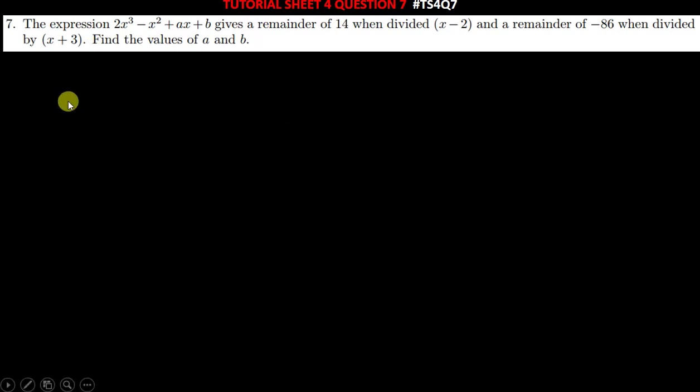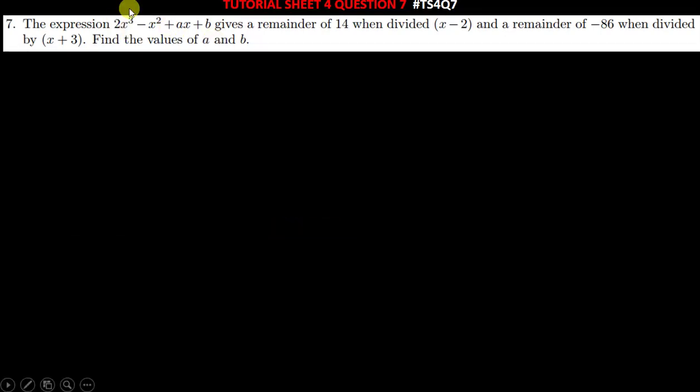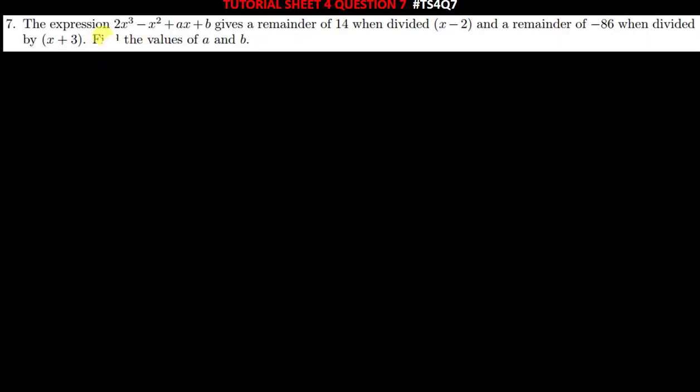This question is not very different from question 6, and hence the way I'm going to solve it is similar. When you read the question, it's telling us that whenever you divide this function by x minus 2, you get the remainder of 14. What this simply means is that when you find f of x, we equate x minus 2 to 0.